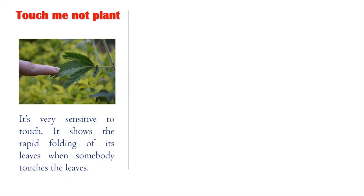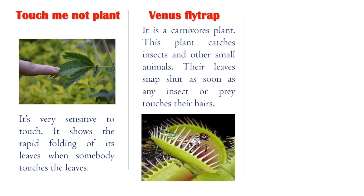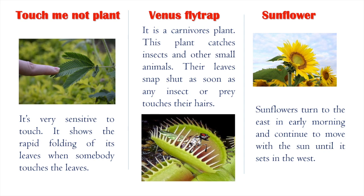Let's study some examples. We are familiar with the plant Touch-me-not. It's very sensitive to touch — it shows rapid folding of its leaves when somebody touches them. Venus flytrap is a carnivorous plant that catches insects and other small animals; their leaves snap shut as soon as any insect or prey touches their hairs. We are also familiar with the movement of sunflowers — they turn to the east in early morning and continue to move with the sun until it sets in the west. These examples show the presence of sense in plants.